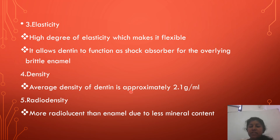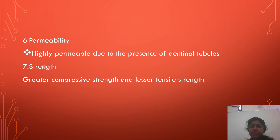Its average density is 2.1 grams per milliliter and it is more radiolucent than enamel due to its less mineral content. It is highly permeable due to the presence of dentinal tubules and shows greater compressive strength and lesser tensile strength.